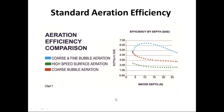A chart of pounds of oxygen per horsepower per hour versus lagoon depth shows surface aerators perform better at shallower depths because they reach the bottom, but you may need more units to avoid dead zones between pockets of coverage. With coarse and fine bubble diffused aeration, you get higher oxygen transfer efficiency across depths of 8–16 feet.